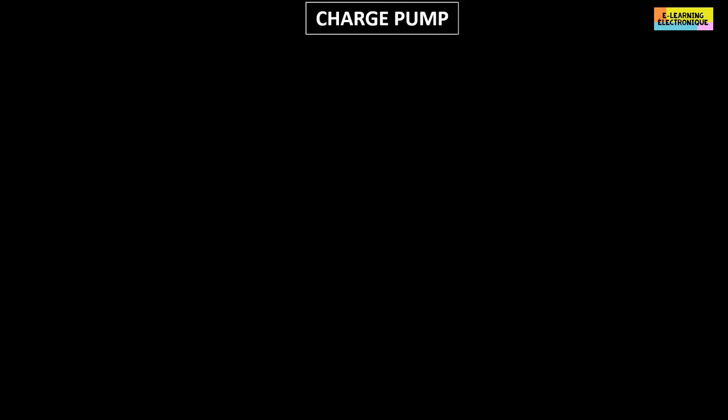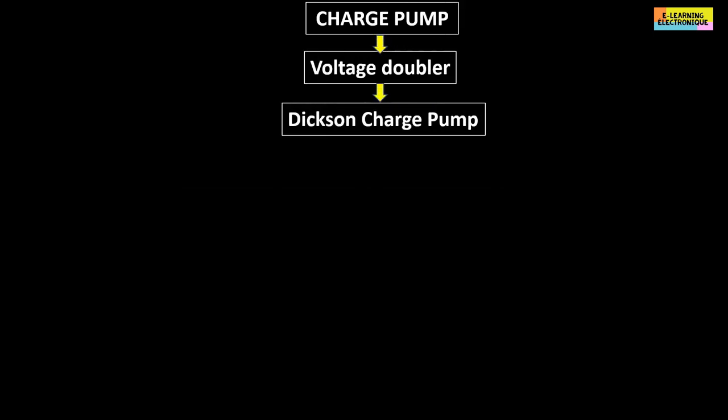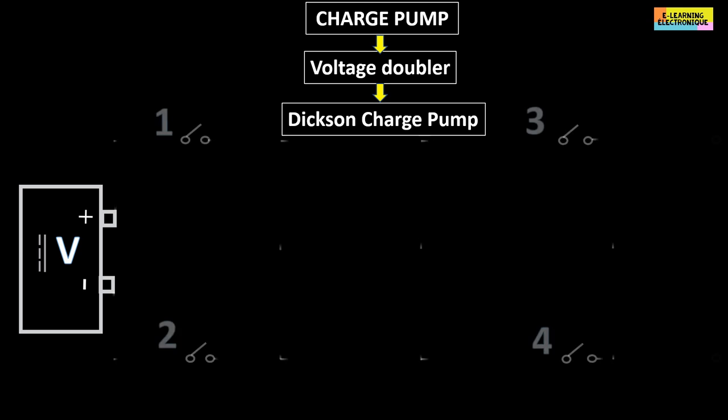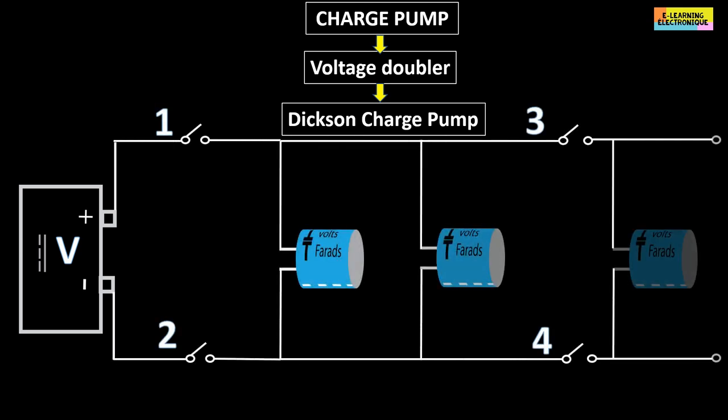The charge pump converter is also known as a voltage doubler and is the Dixon charge pump. Here is its working principle. The circuit includes a current source with a voltage of value V, four switches and three electrolytic capacitors named respectively C1, C2 and C3.